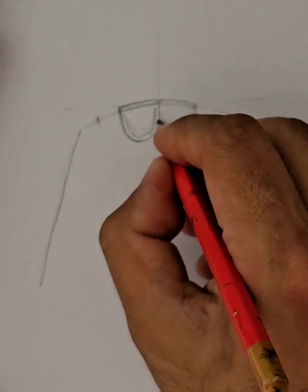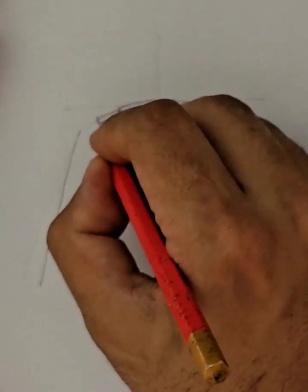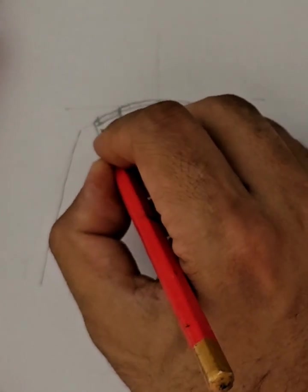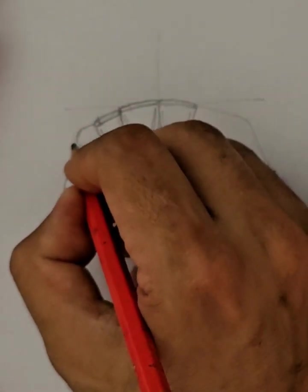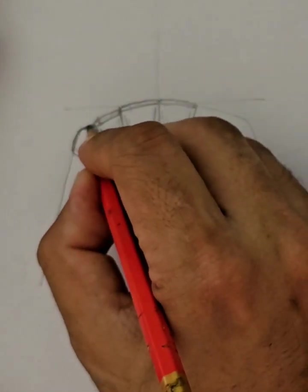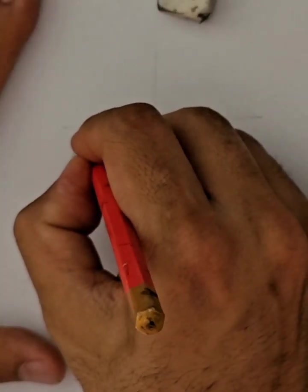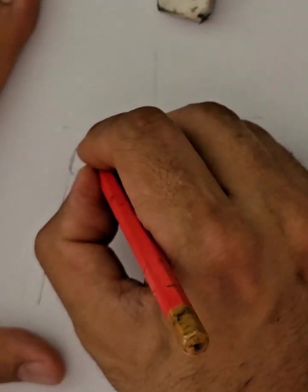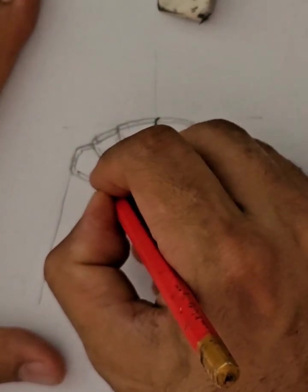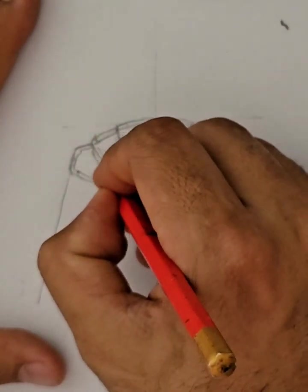That's one. Lateral incisor. Lateral incisor. Canine. Obviously, canine has to be larger than the lateral incisor. Keeping this end sharp and this end rounded. Here, of course, we need to have a small notch for that. Don't connect these two. Keep it unconnected. A larger cingulum for a prominent canine. Larger cingulum for a prominent canine. And that's your canine.